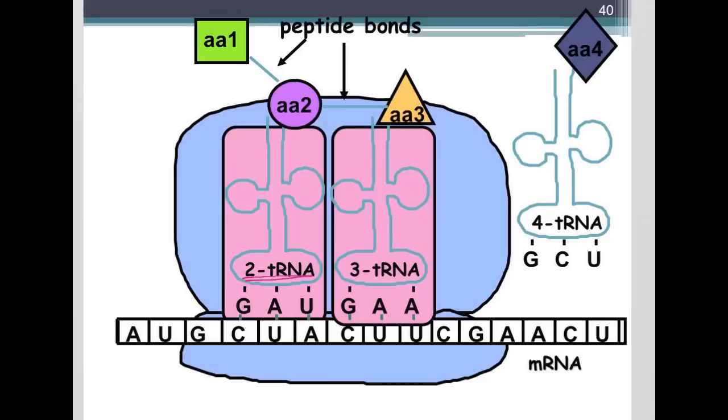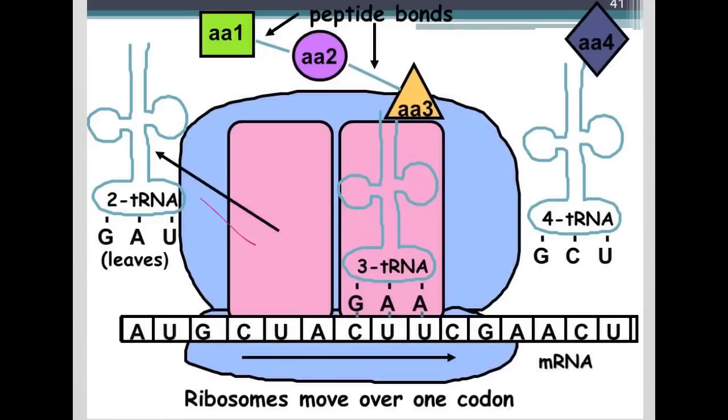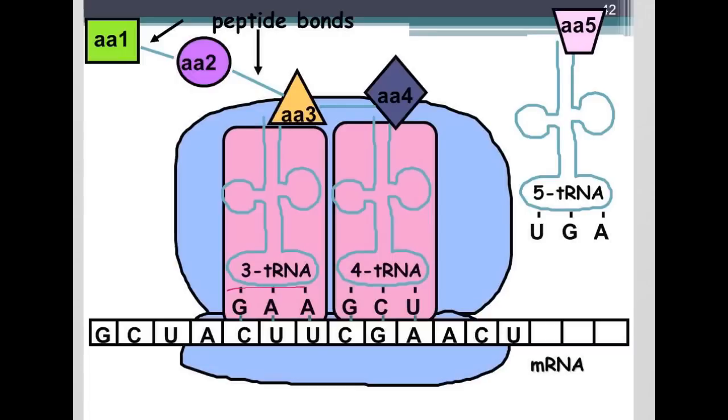So, the ribosome then moves over one codon. Now our second amino acid's in the P site. Our third amino acid's in the A site. A new peptide bond is formed. Amino acid 4 wants to come in. This one leaves. These are now attached. This moves over into the P site. 4 moves in here, and continuing.